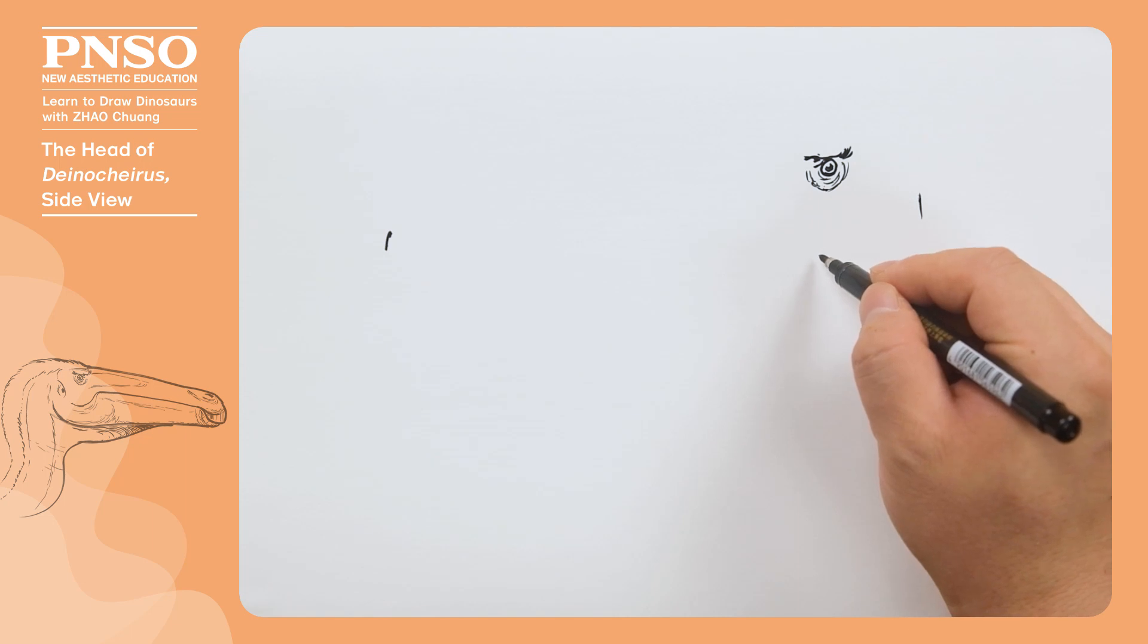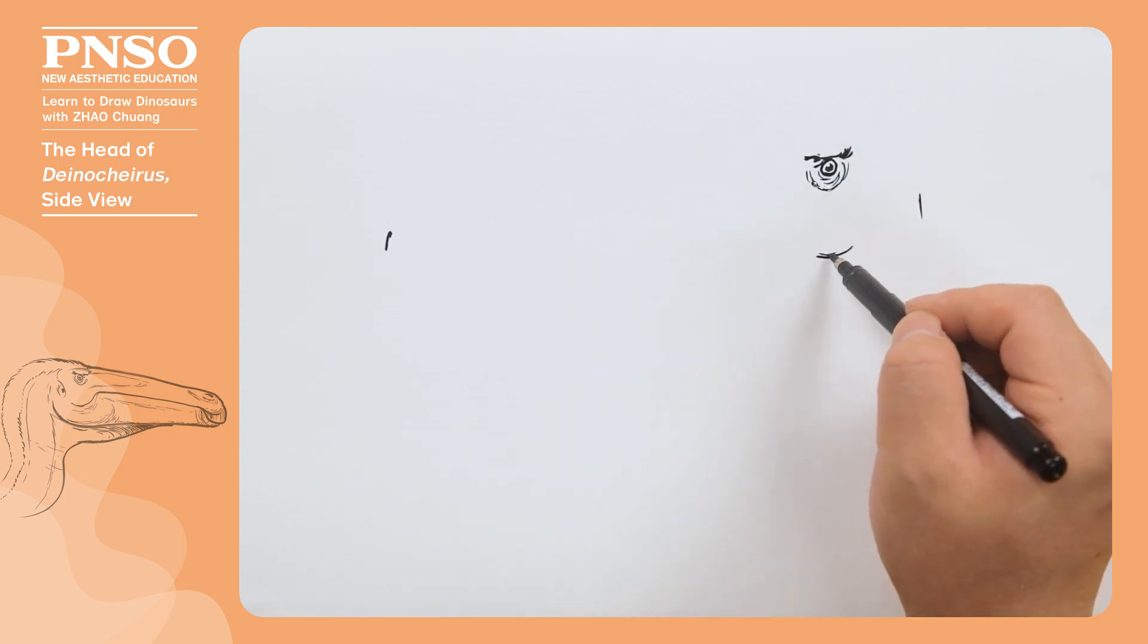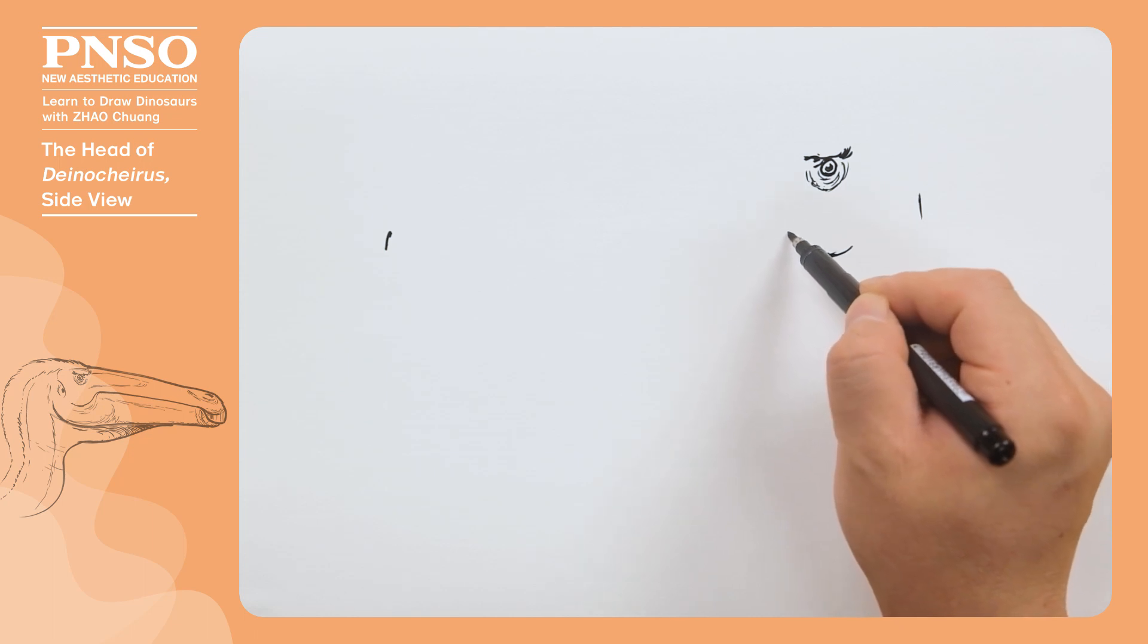First, the end of its mouth began from its jugal bones. Its jugal bones were relatively downward, roughly below the eyes. Then we move up and forward, its mouth was over its jugal bones, arched upward like this.